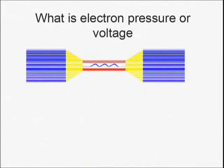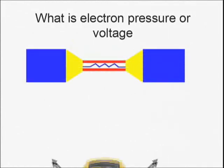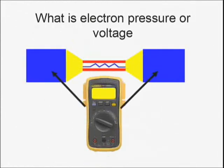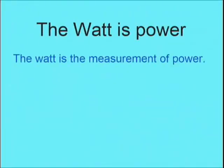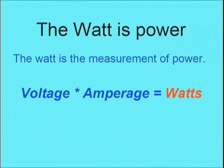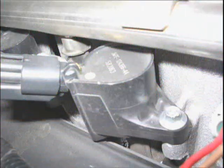We can see on screen the different ways to measure voltage and power. Current flow is also important when measuring voltage — probe with the multimeter across the resistive load, such as a motor, solenoid, or actuator.